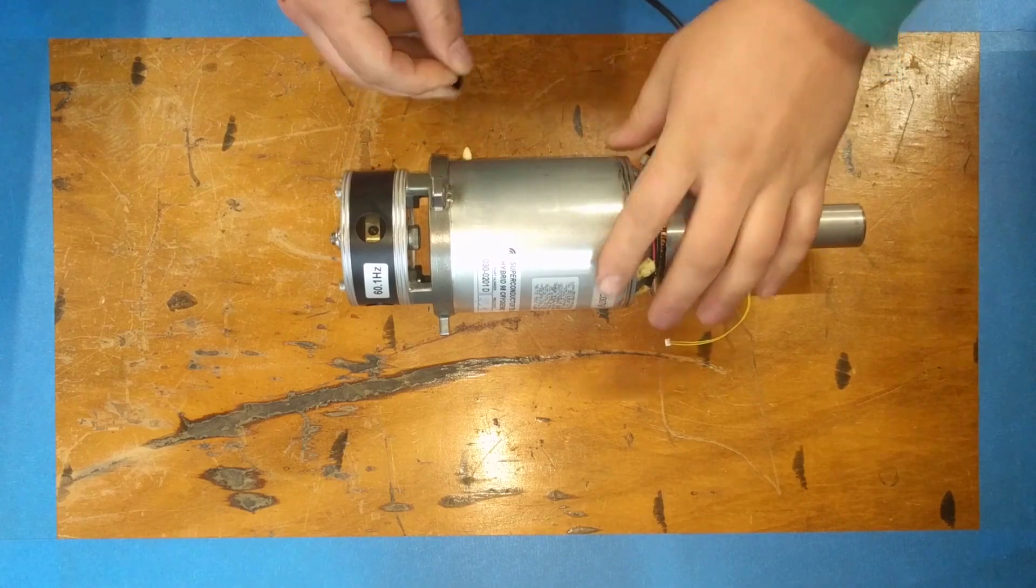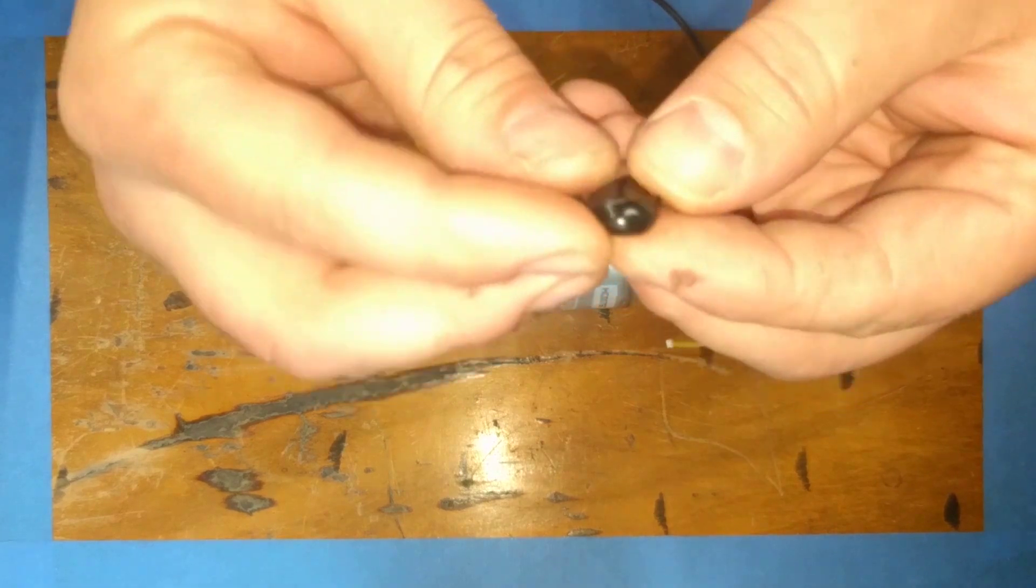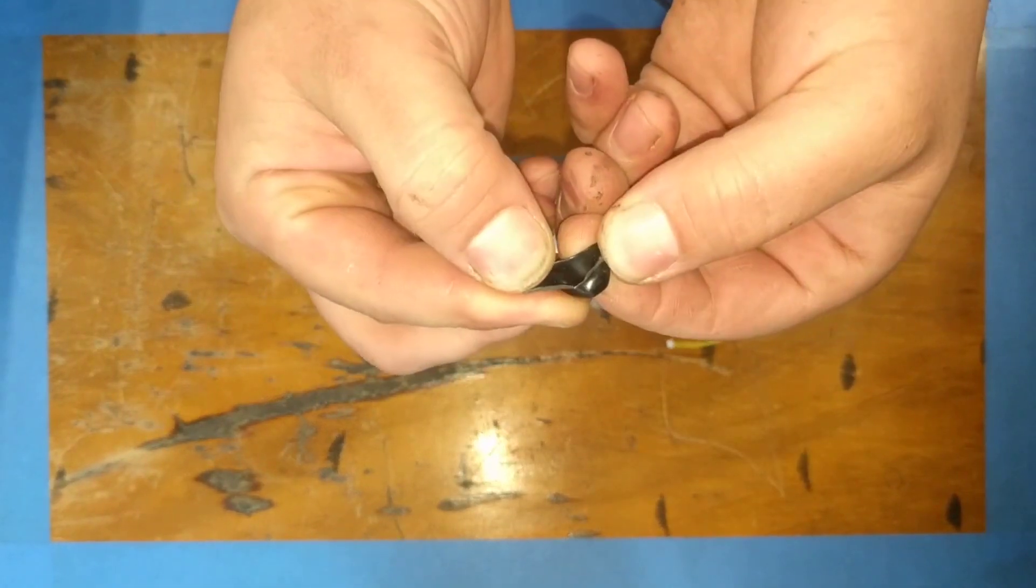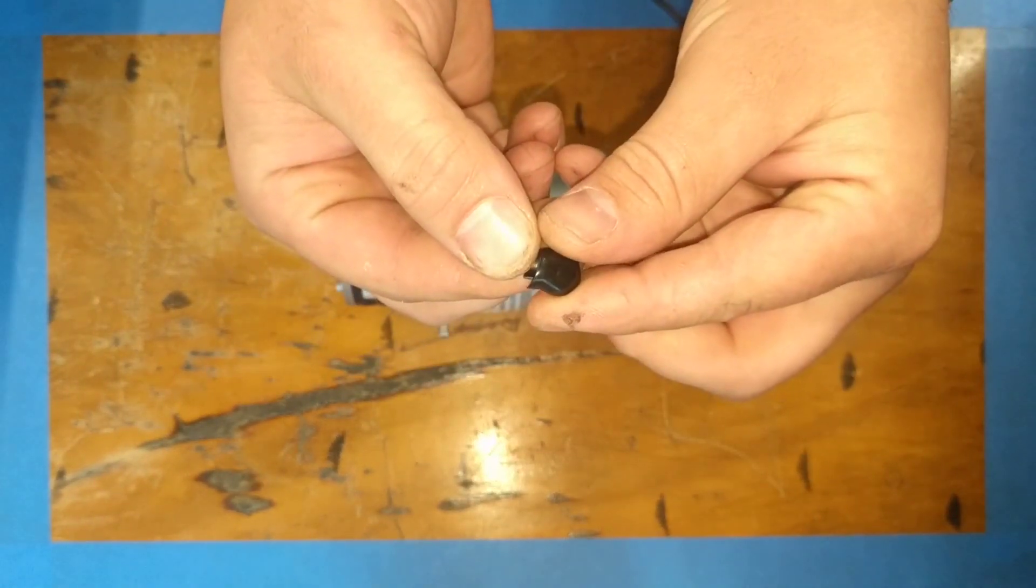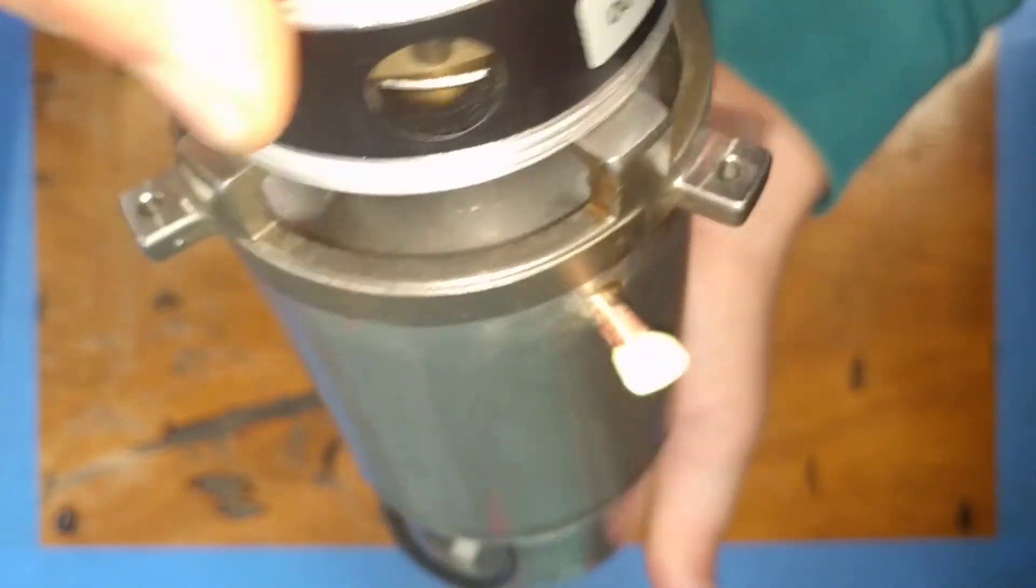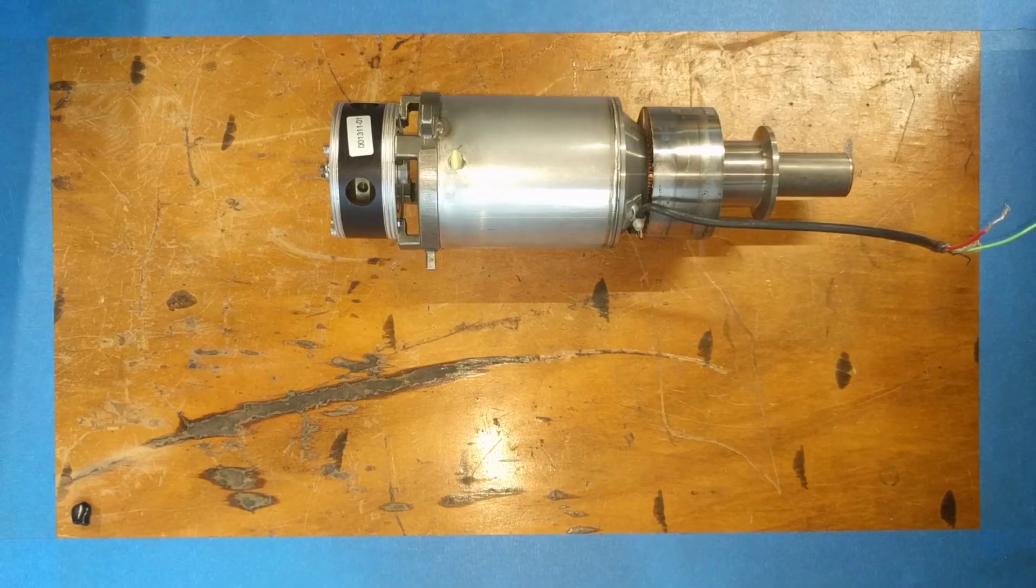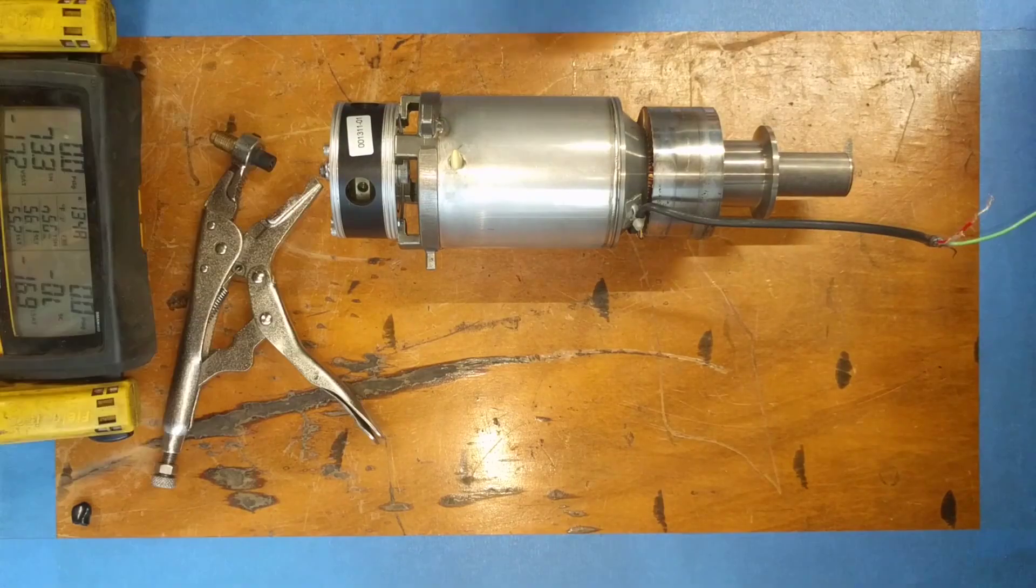They don't come with a service port, so we need to put one on. It does have a process stub, which is nice, but it's super short so we can't use a BPB or anything like that. It also has some kind of weird epoxy on the end of it, so that's going to be interesting.